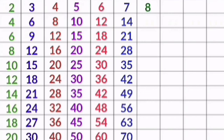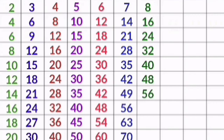8 1s are 8, 8 2s are 16, 8 3s are 24, 8 4s are 32, 8 5s are 40, 8 6s are 48, 8 7s are 56, 8 8s are 64, 8 9s are 72, 8 10s are 80.